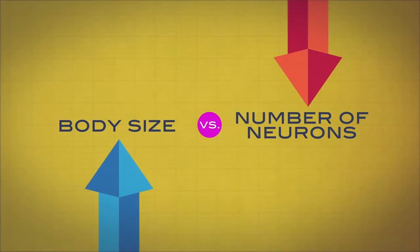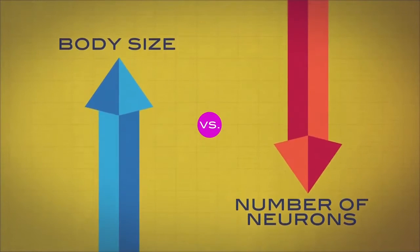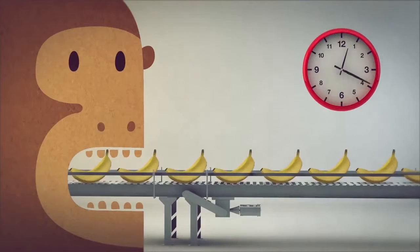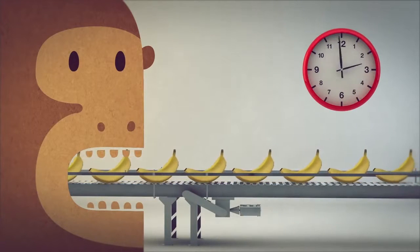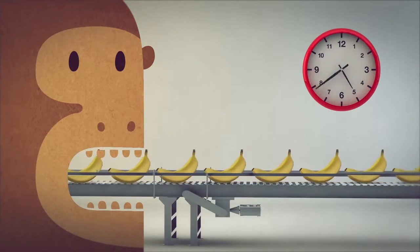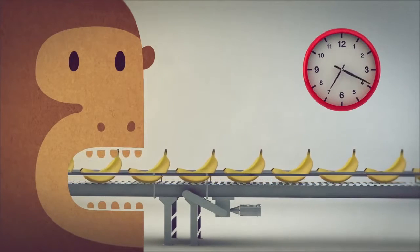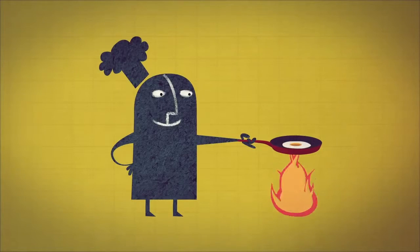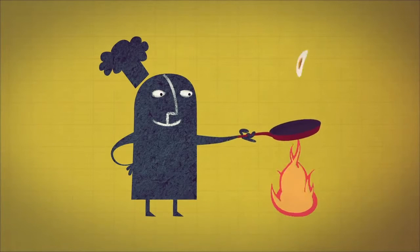There is a trade-off between body size and the number of neurons a primate, including us, can sustain. A 25-kilogram ape has to eat 8 hours a day to uphold the brain with 53 billion neurons. The invention of cooking, 1.5 million years ago, gave us a huge advantage.